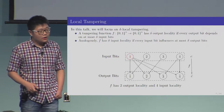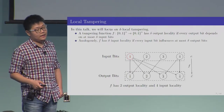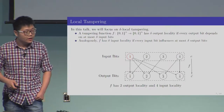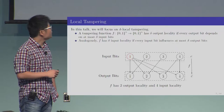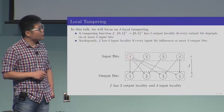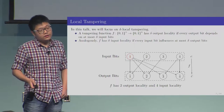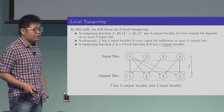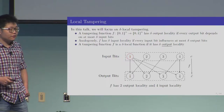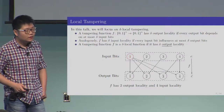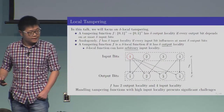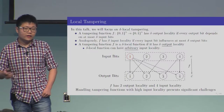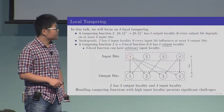Analogously, we say that f has delta input locality if every input bit influences at most delta output bits. In this example, the first bit actually influences all the output bits; therefore, this function f has four input locality. We say a tampering function f is delta-local if it has delta output locality. Note that for delta-local tampering functions, the function can actually have arbitrarily large input locality, just like this example.